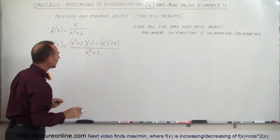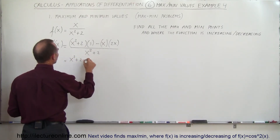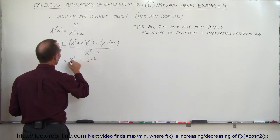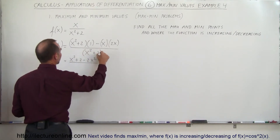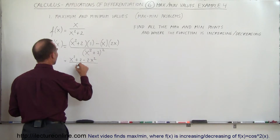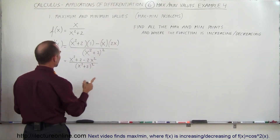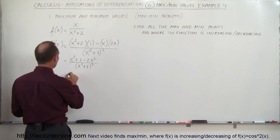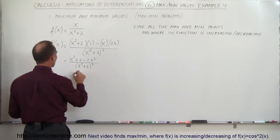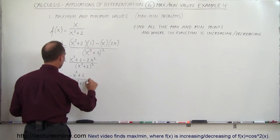We want to simplify that a little bit. This gives us x squared plus 2 minus 2x squared, all divided by the denominator x squared plus 2 quantity squared. Simplifying a little bit more, we get minus x squared plus 2 divided by the quantity x squared plus 2 quantity squared.